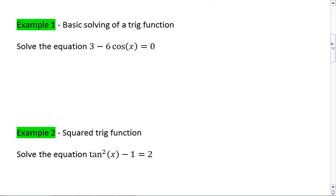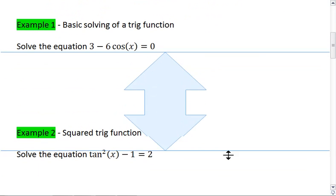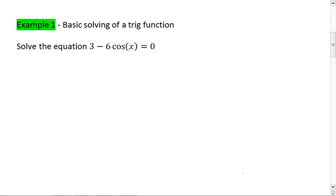The first we have is the basic solving of a trig function. We're going to solve the equation 3 minus 6 cosine x equals 0. If you just have one trig function, what we're going to do is we're going to try to get it alone. So we're going to have negative 6 cosine x equals negative 3.